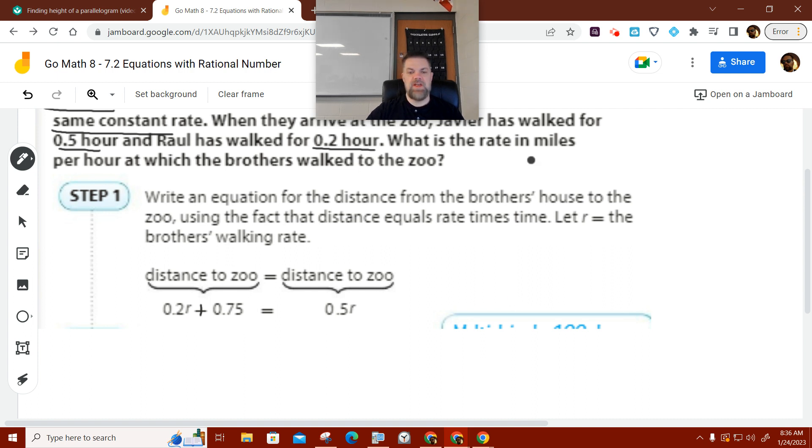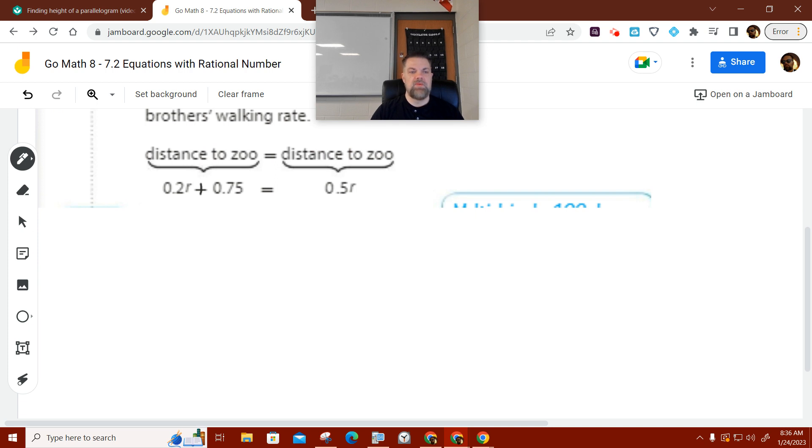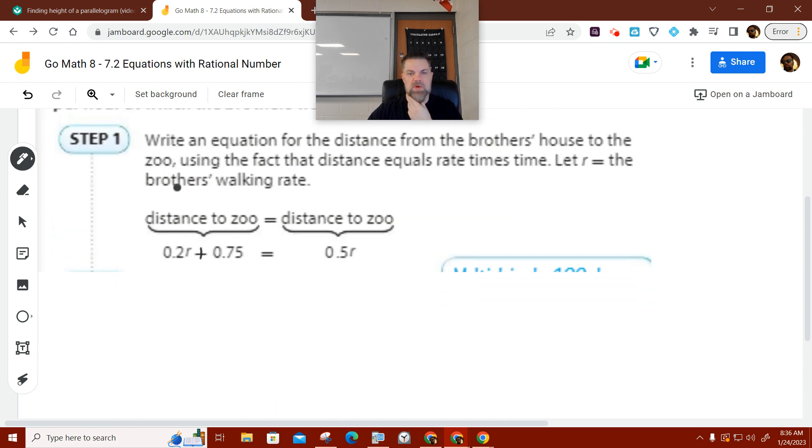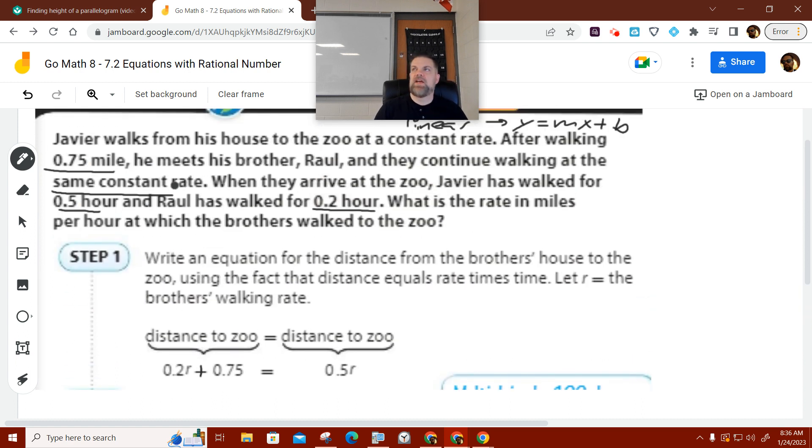Well, you get this equation set up like this, where the rate was 0.2R plus, well, let me back up. What was the rate in miles per hour that both brothers walked? So I said that wrong. They walked different distances and they, but they walked the same rate.